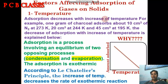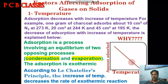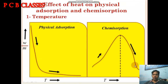This is the graph for physical adsorption — the adsorption isobar. The y-axis shows the amount of adsorption and the x-axis shows the temperature. The graph has a directly negative slope, meaning if you increase the temperature on the x-axis, the amount of adsorption decreases.